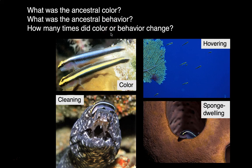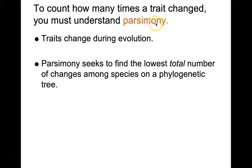To do that, you need to understand parsimony. You're going to apply the principle of parsimony, which seeks to find the lowest total number of changes among species on a phylogenetic tree. The idea is that the fewest number of changes is most likely to be the correct solution. As a side note, we know from evolutionary studies that this is not necessarily always true, but it will work for this exercise.